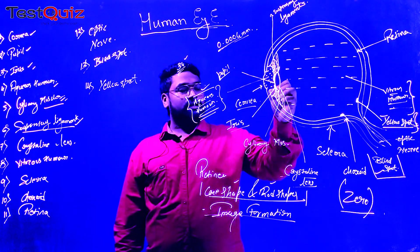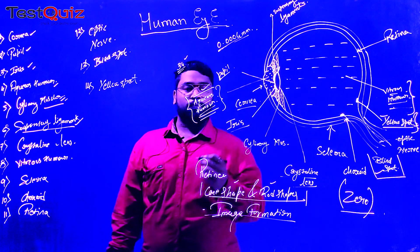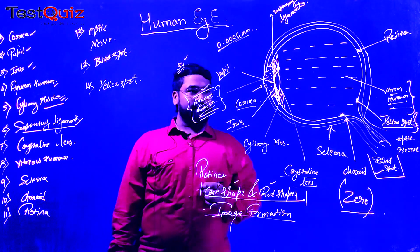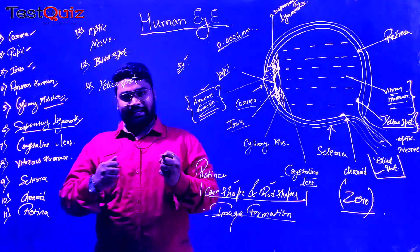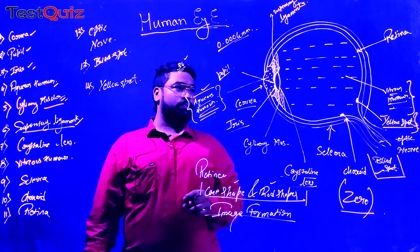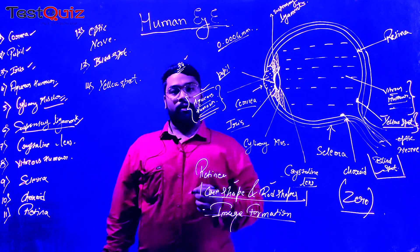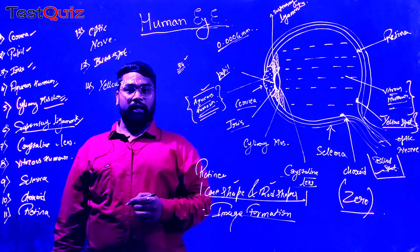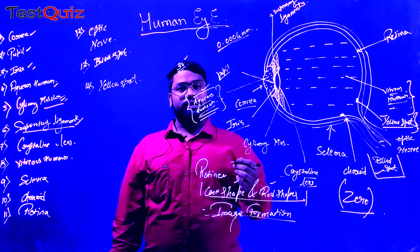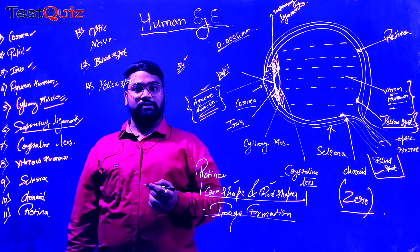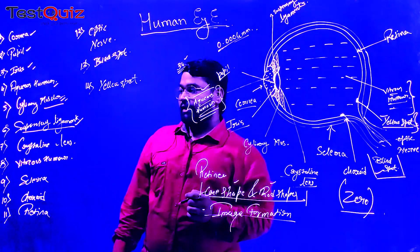Similarly, the size of the pupil can also increase and decrease depending upon the iris. The iris slightly increases or decreases the size of the pupil depending upon the intensity of light in the surrounding. If the intensity of light is minimum, the size of the pupil has to increase. But if the intensity of light is maximum, the size of the pupil can decrease — depending upon the iris-like structure.